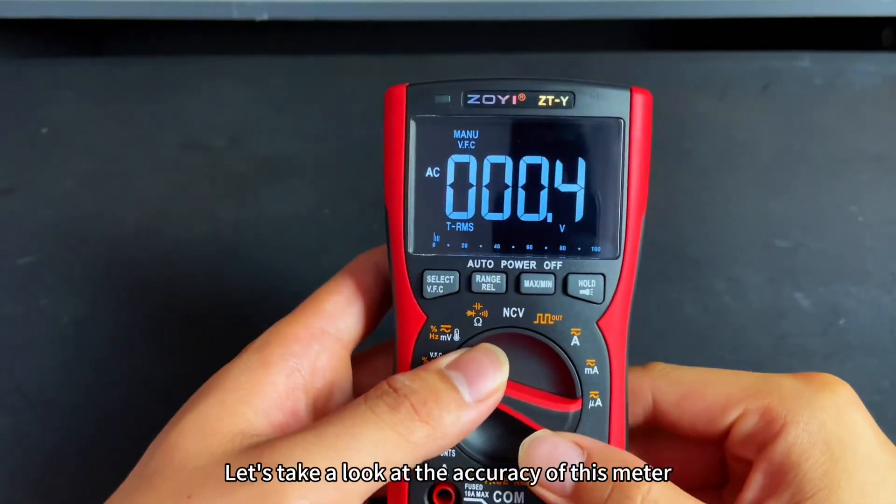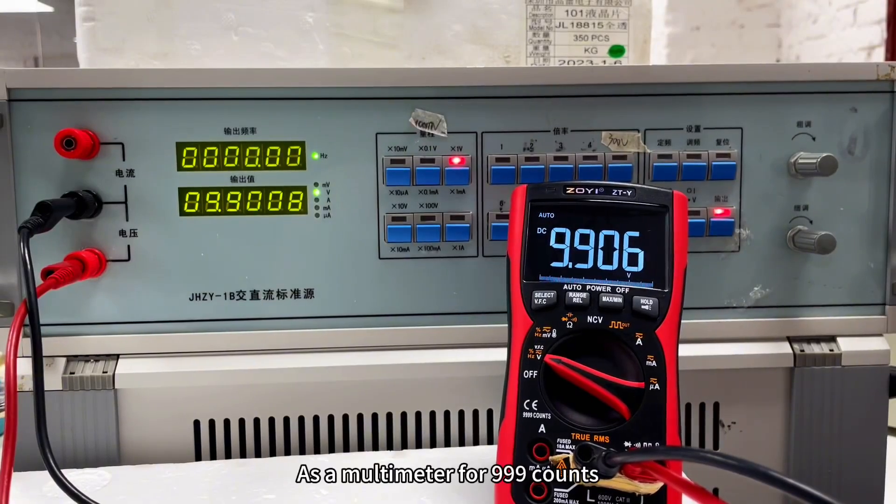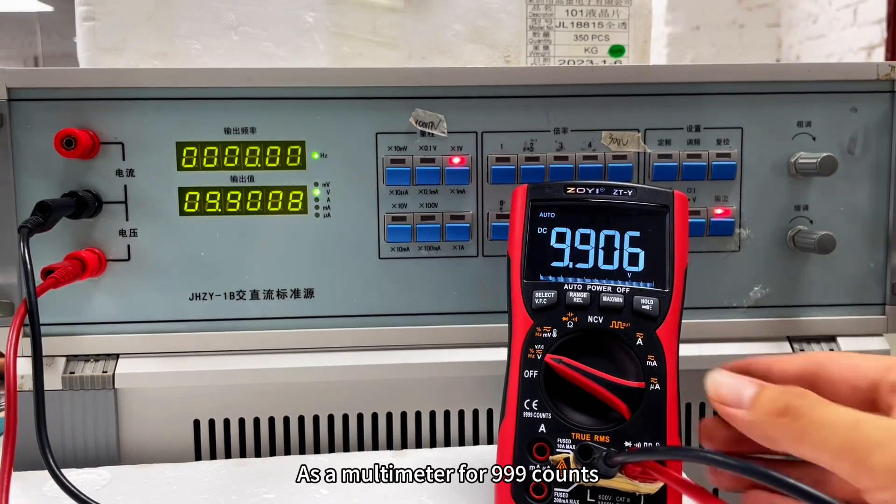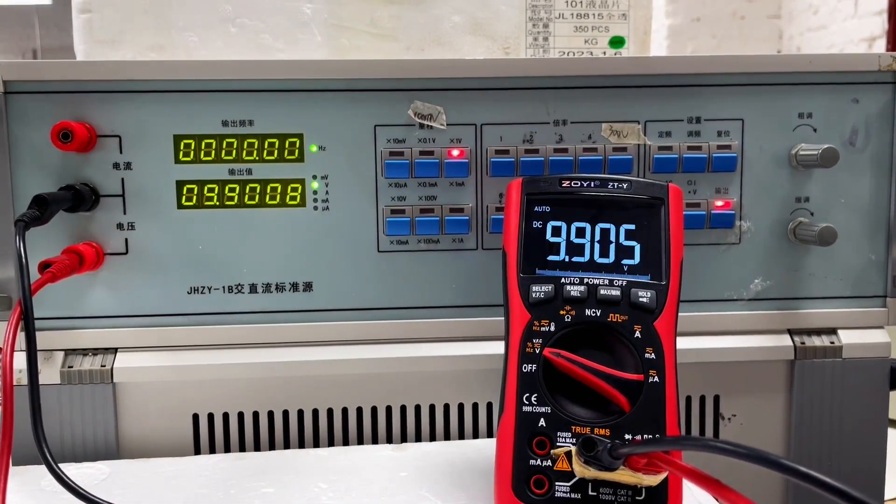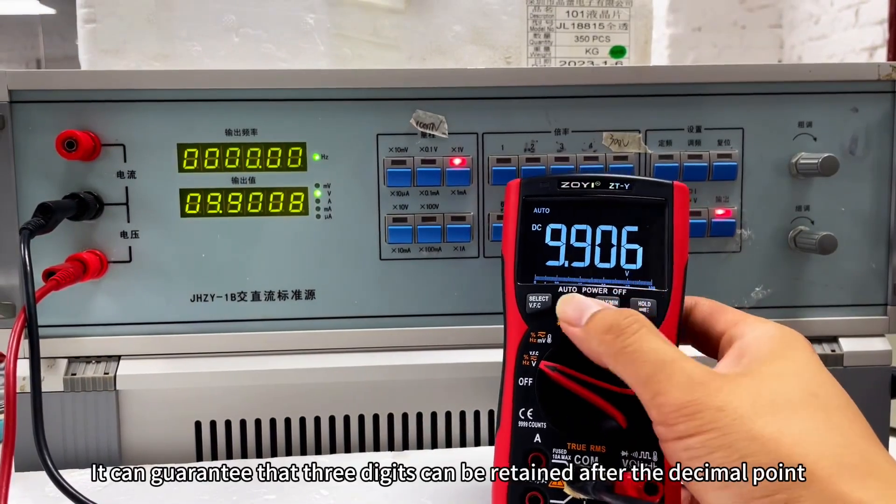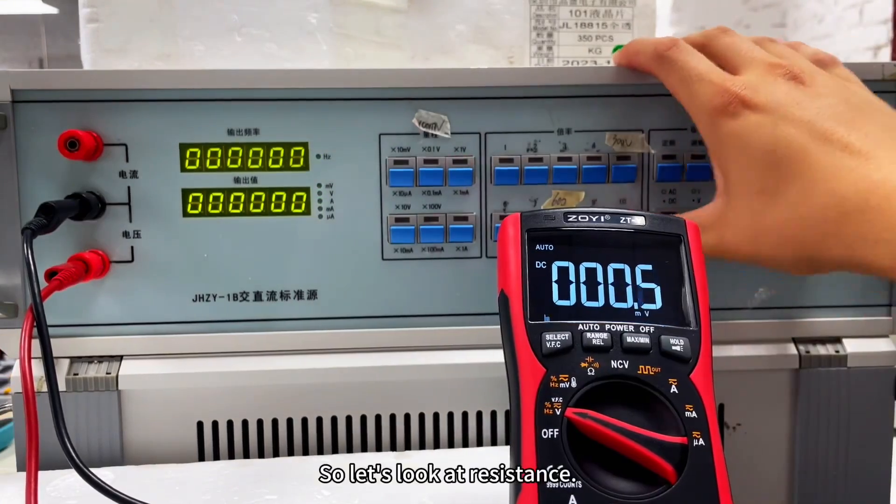Let's take a look at the accuracy of this meter. As a multimeter with 999 counts, when measuring 9.908 volts AC, it can guarantee that 3 digits can be retained after the decimal point. Now let's look at resistance.